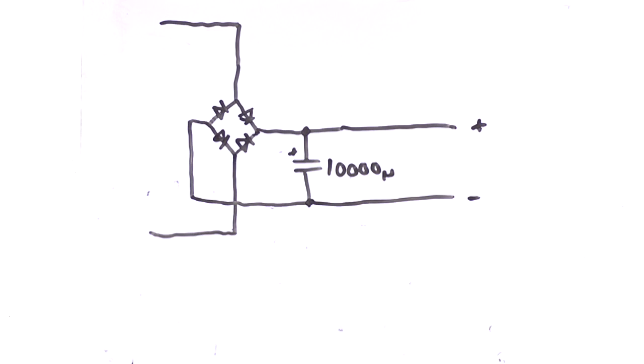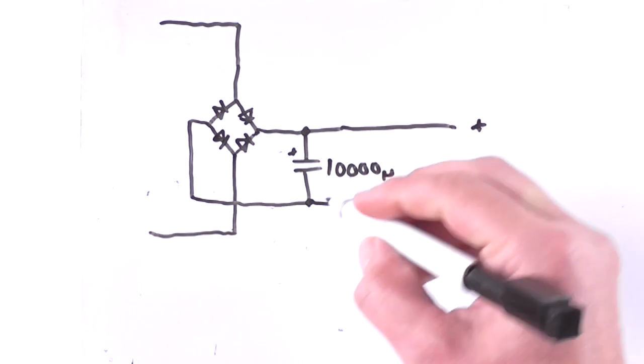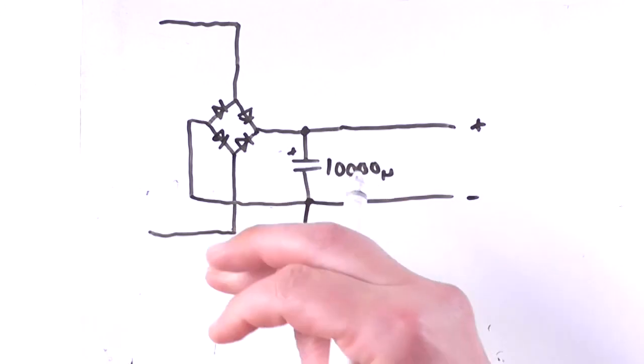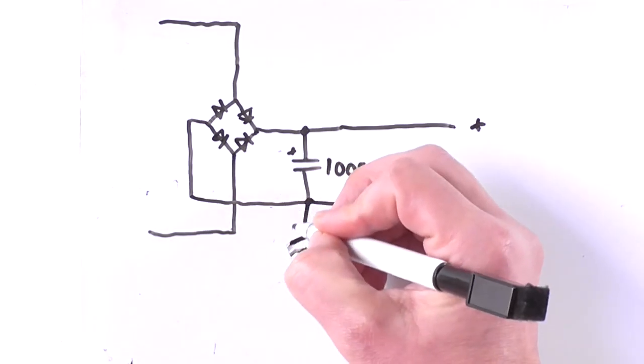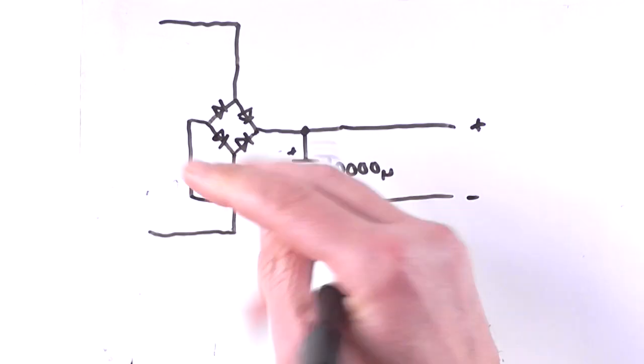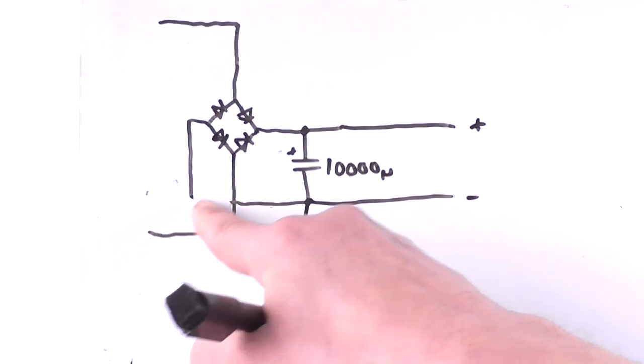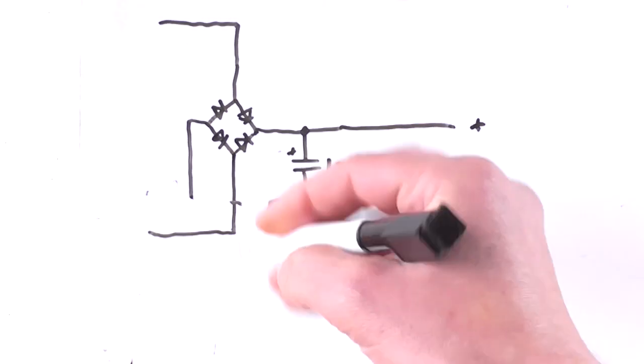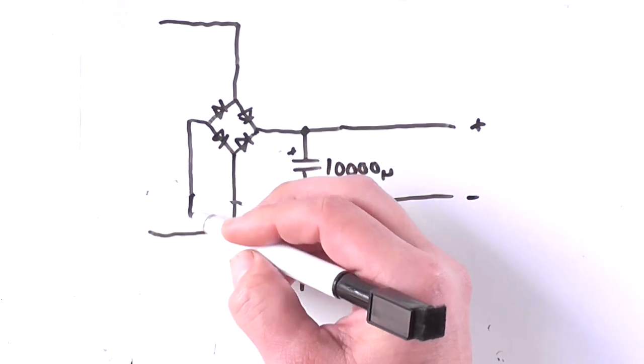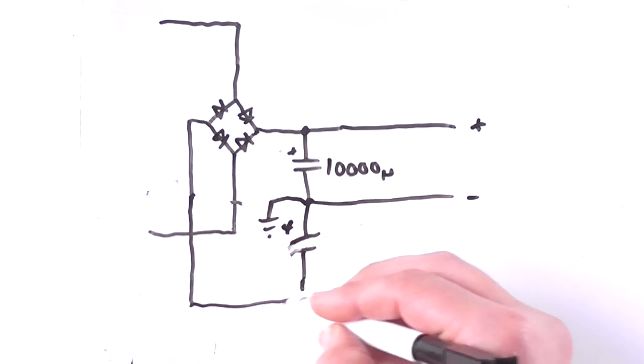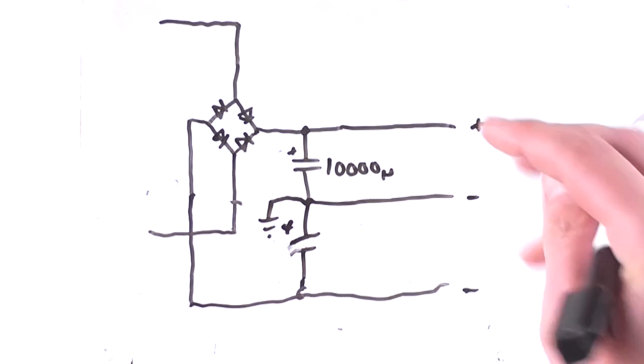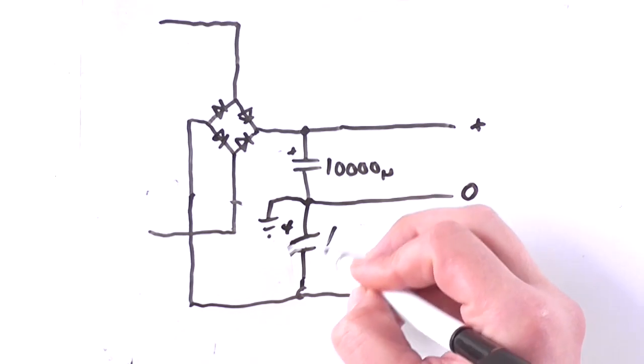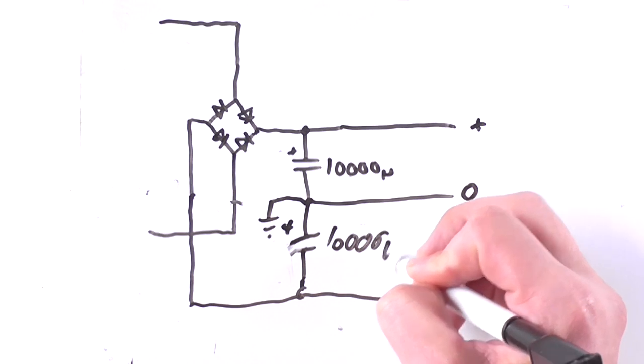However, if we were to change this from a single ended power supply to a bipolar one by adding in an extra capacitor here, we move this negative line that now becomes zero that connects off to the transformer center tap. 10,000 microfarad.